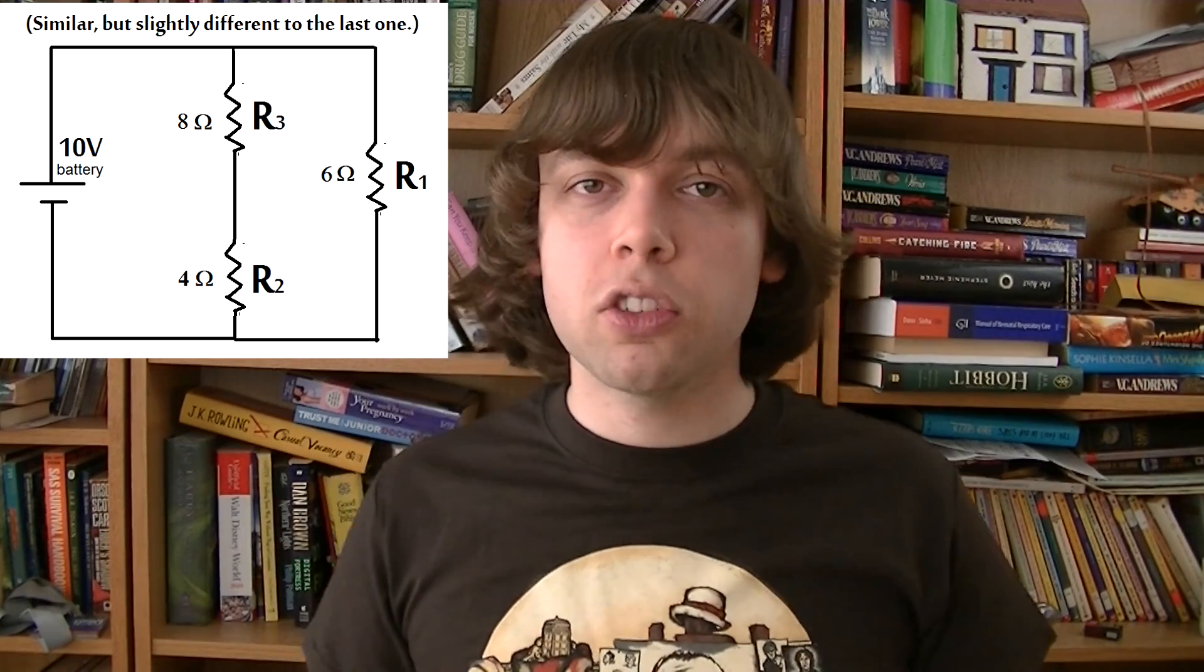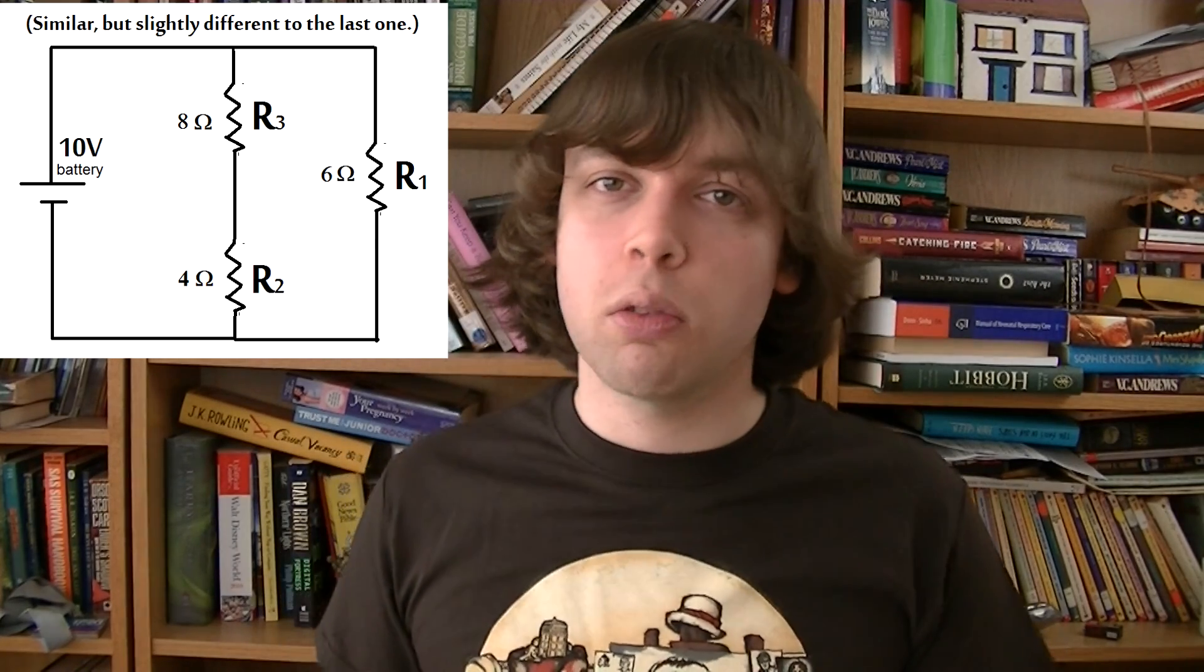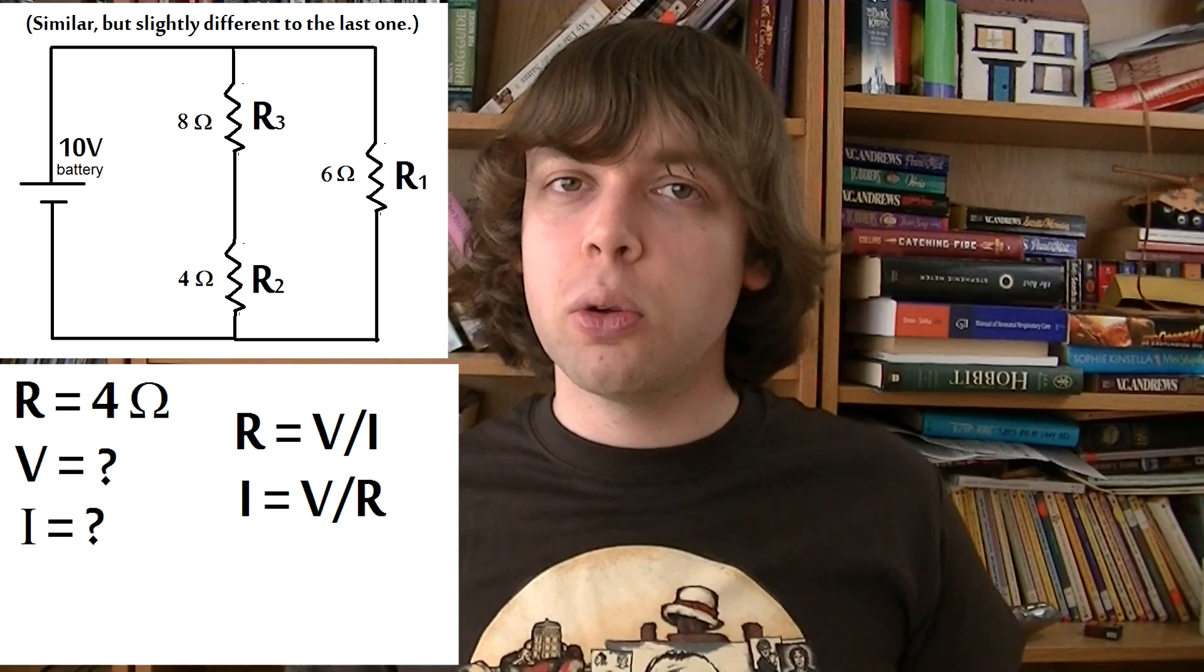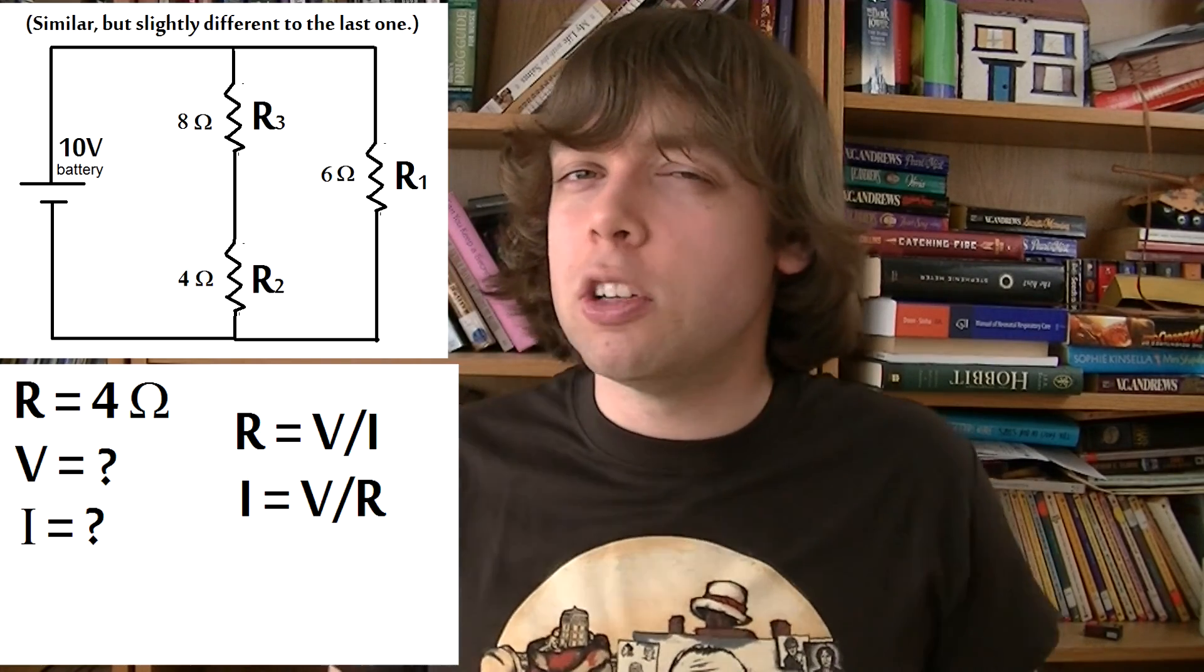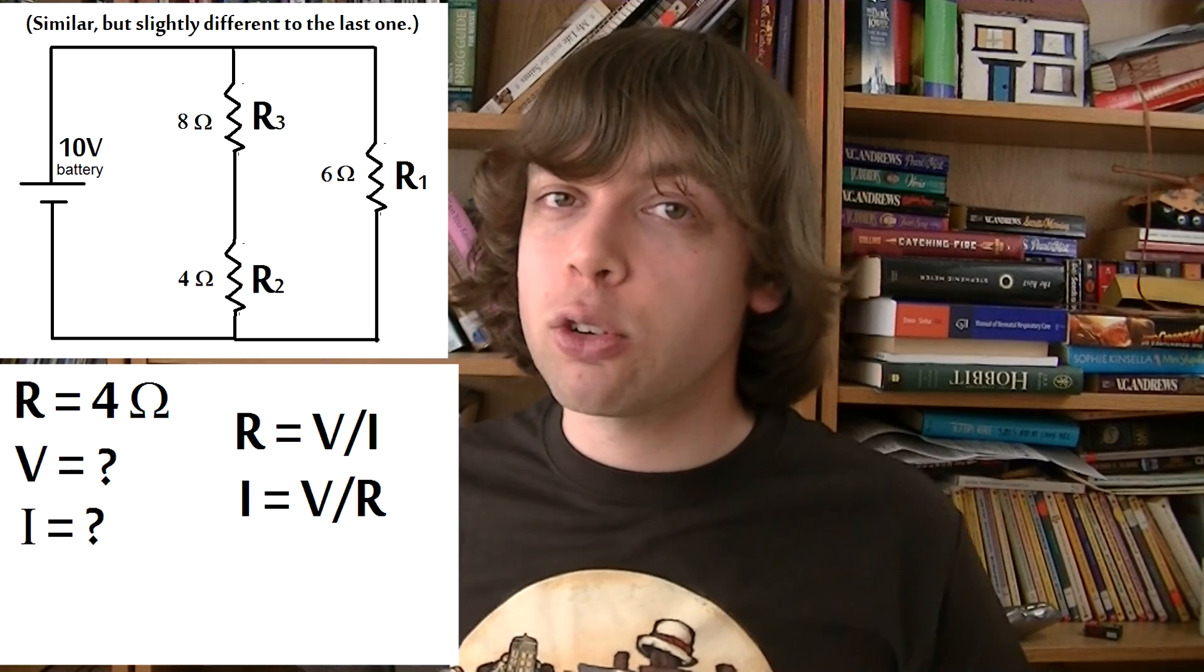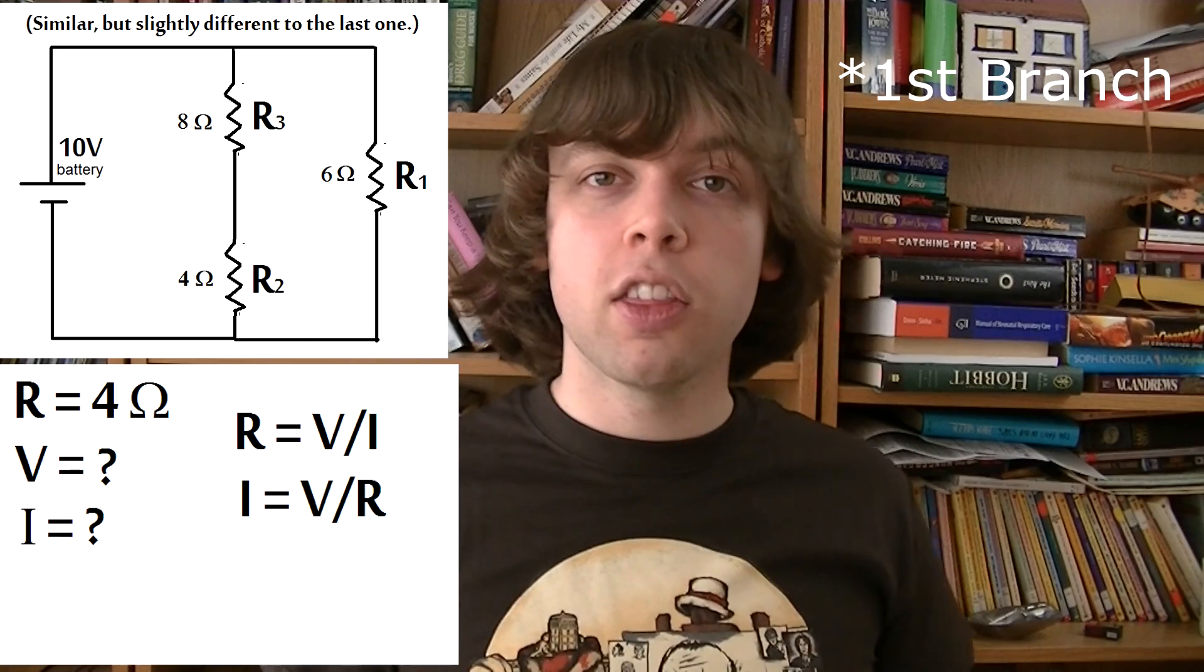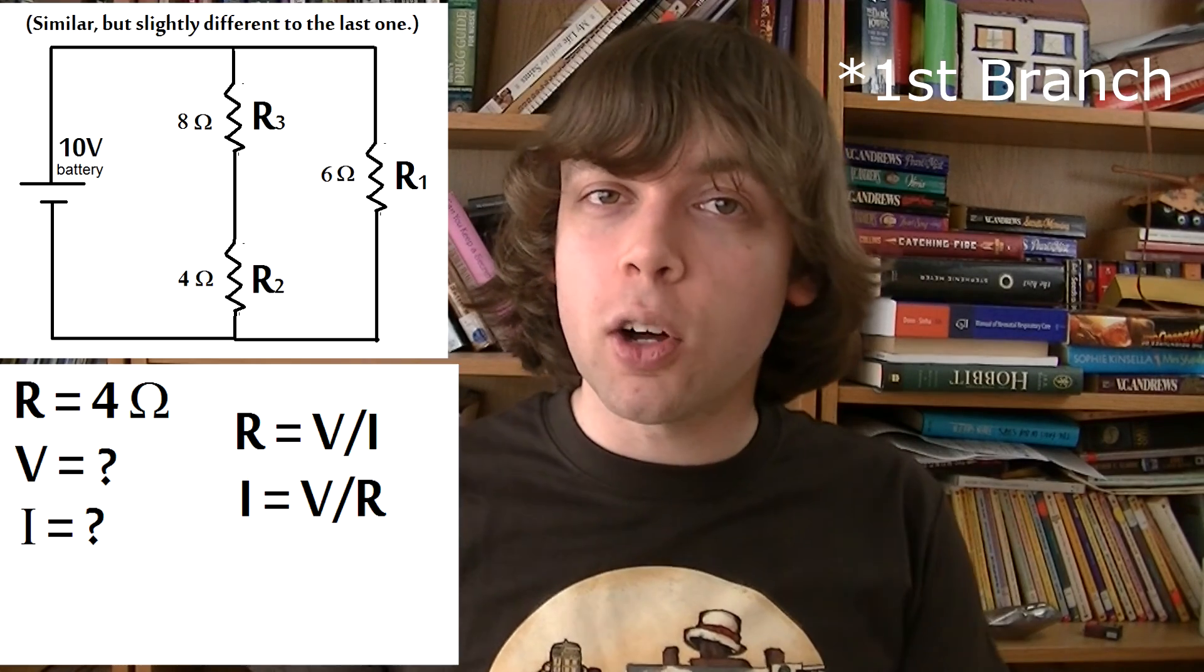Here's the simplest one. We'll at some point need to use the R equals V over I equation to calculate the current flowing through resistor 2. We know that resistor 2 has a resistance of 4 ohms, but we don't know what voltage it's using. The battery is a 10 volt battery, and we know that every branch in the parallel circuit will use up the full voltage of the battery. The second branch will use a full 10 volts.